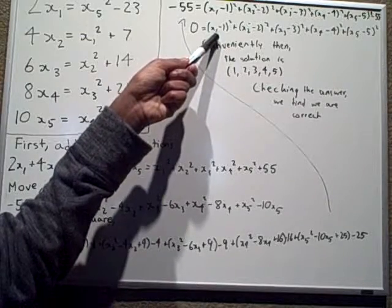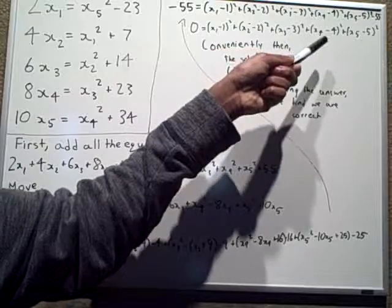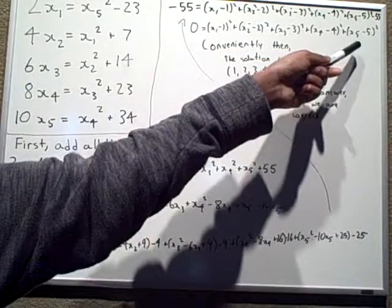So this has to equal 1, this has to equal 2, this has to equal 3, this has to equal 4, and this has to equal 5.